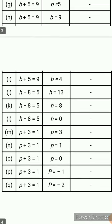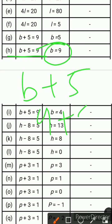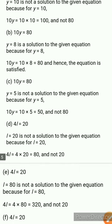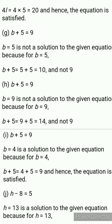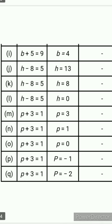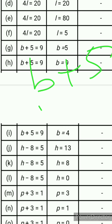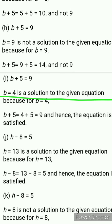Now for b plus 5 equals 9 where b equals 4. Put 4 in place of b: 4 plus 5 equals 9. The answer is 9, which matches the right-hand side. So the equation is satisfied. Therefore b equals 4 is the solution of the given equation.